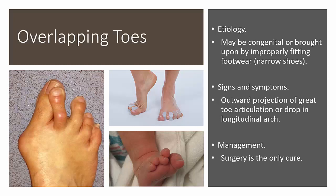Overlapping toes — the etiology may be congenital or brought about by improperly fitting footwear such as narrow shoes. Signs and symptoms include outward projection of the great toe articulation or a drop in the longitudinal arch. Management is similar to toe deformity; surgery is the only cure. Modalities such as whirlpool baths can help alleviate inflammation, and taping may prevent some contractual tension within a sports shoe, but surgery remains the only definitive treatment.